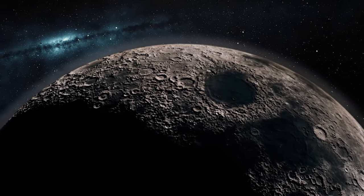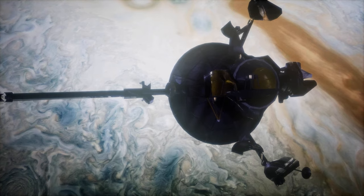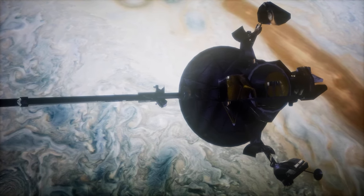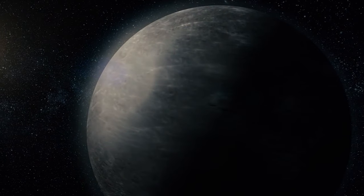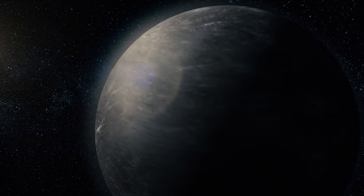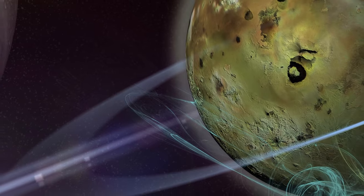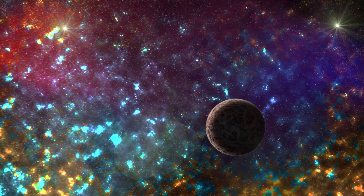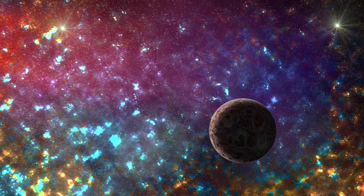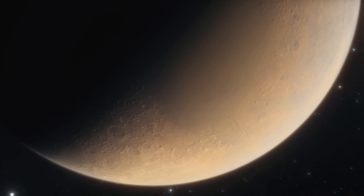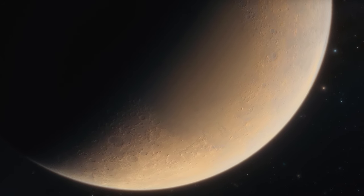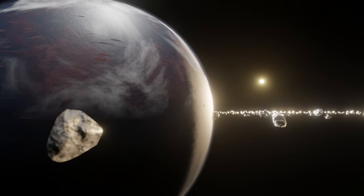Size-wise, rogue planets can range from being as massive as Jupiter, the largest planet in our solar system, to being as small as Earth, or even smaller. And while they lack the warmth of a star, they aren't necessarily devoid of energy or activity. Some rogue planets might still radiate heat from their formation. This residual warmth, combined with potential internal heat-generating processes, means these planets could harbor subsurface oceans.